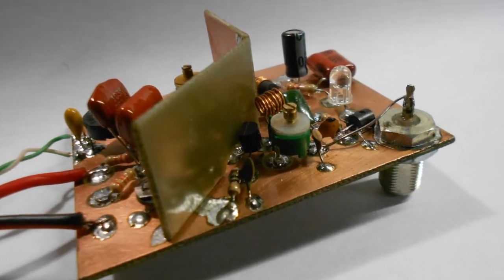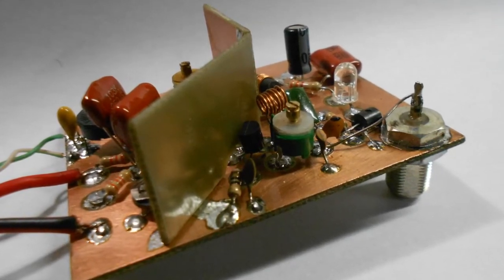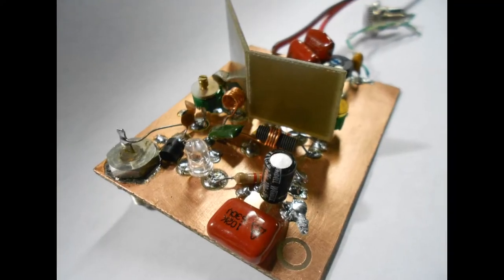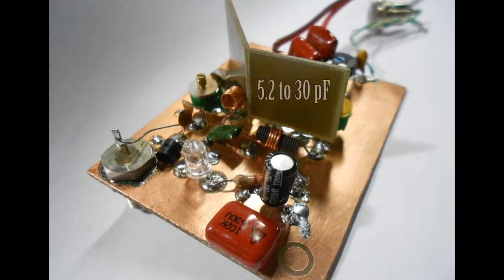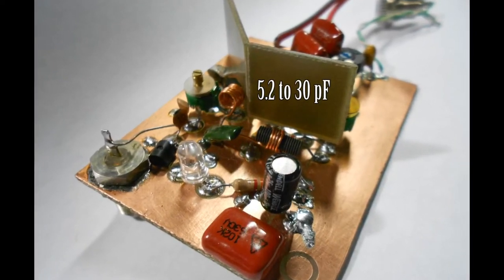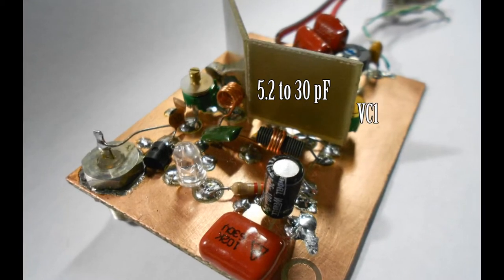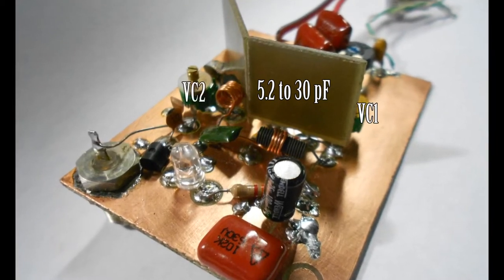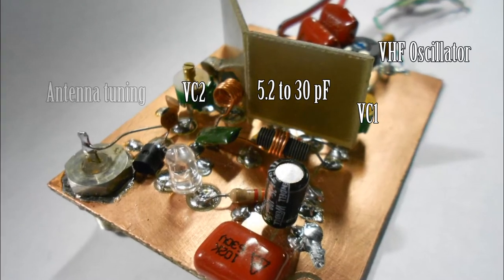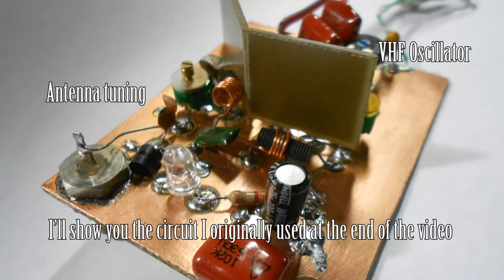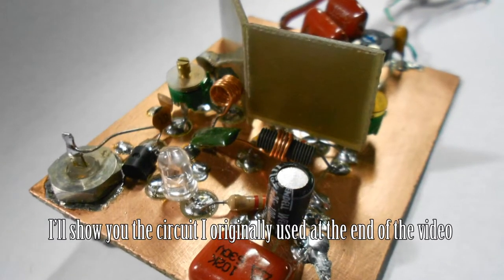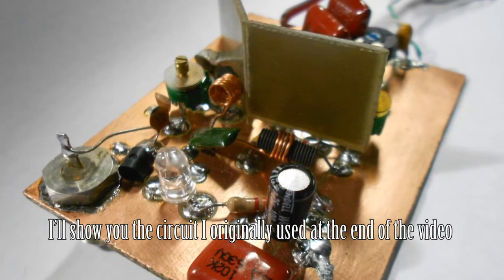He's made some changes because of the components that he was able to get. He's used a 5.2 to 30 pF capacitor trimmer for VC1 and VC2. That's the oscillator and the antenna tuning capacitors. And he's used a 2N2222 for the power transistor.